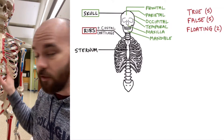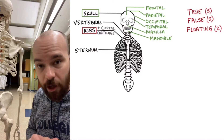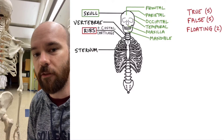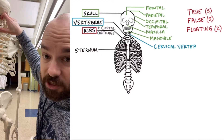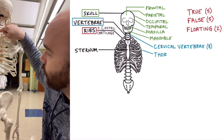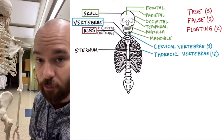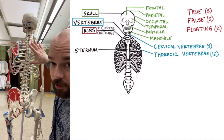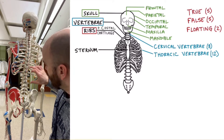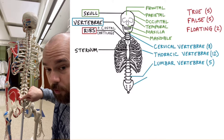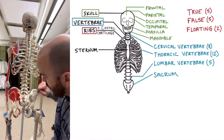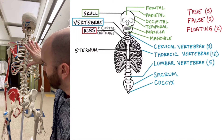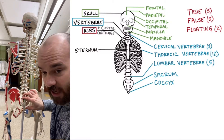Now connecting the skull to the ribs are the vertebrae of your spine. We categorize the different vertebrae depending on where they are and what they attach to. In the most superior part, we have 8 cervical vertebrae. We have 12 thoracic vertebrae — they're called thoracic because they connect to the ribs, that's why we have 12 in that category. Then we have 5 lumbar vertebrae down here, and then we have the bone called the sacrum, which has multiple nerves extending out of it. Finally, the tailbone, which is called the coccyx.